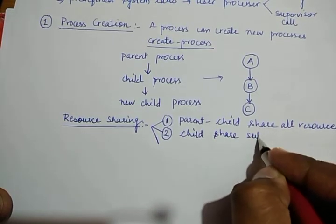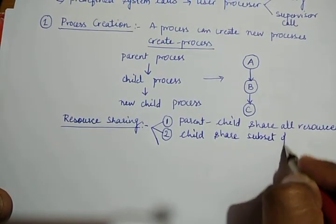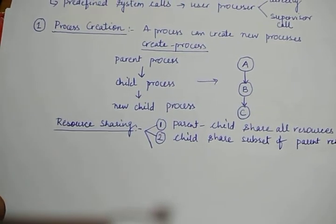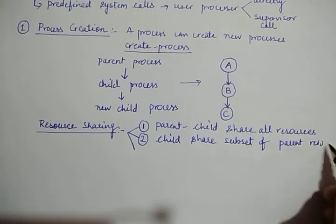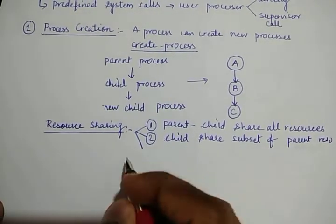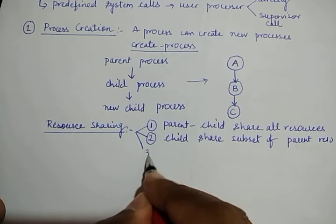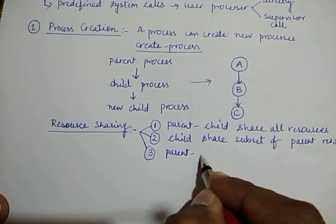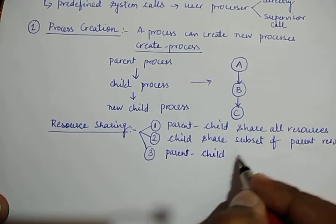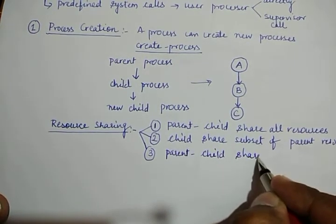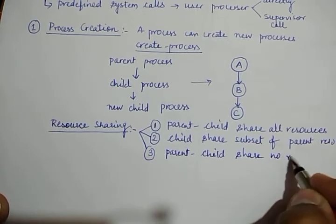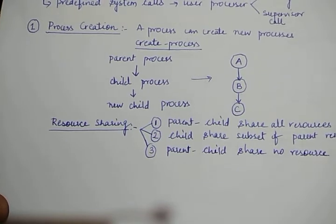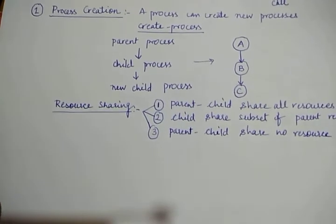The second possibility is that the child shares a subset of the parent's resources. The third possibility is that the parent and child share no resources at all. This is how resource sharing is done during the process creation part.